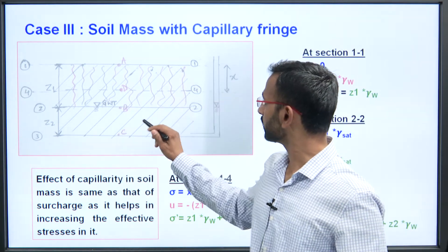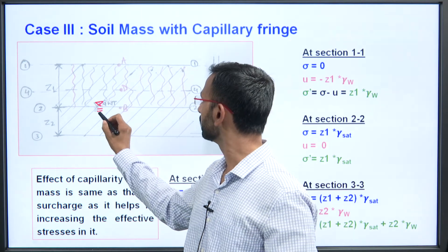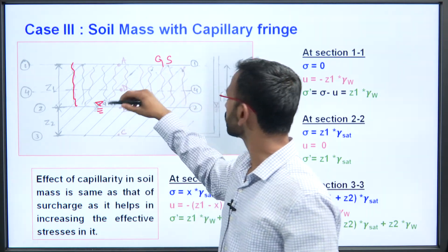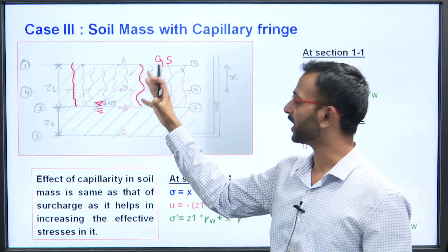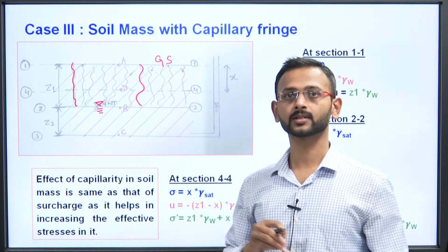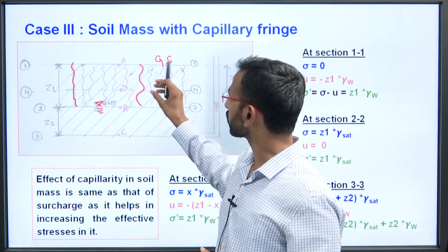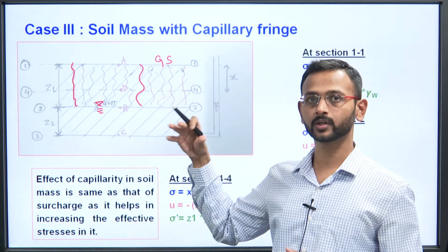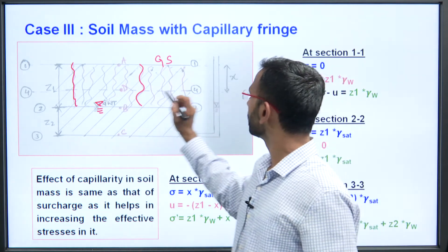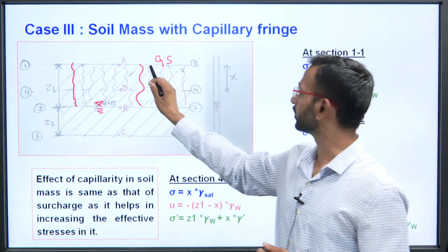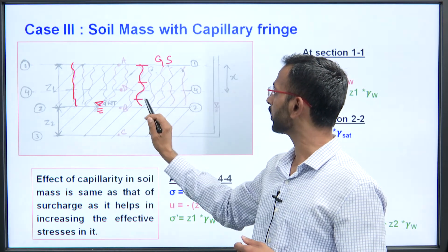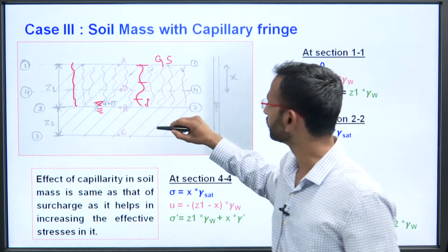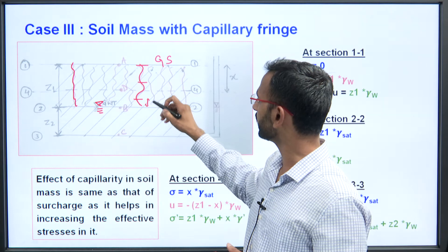This is the soil mass which has the groundwater table at a certain level, and due to capillary action water rises up to the ground surface. The pore water pressure at any point above the water table is due to capillary water pressure. For a small height, the water that has risen is very small.